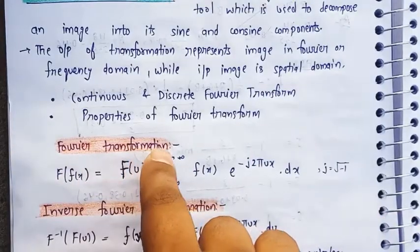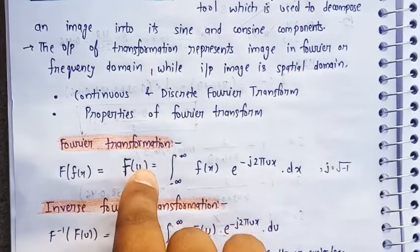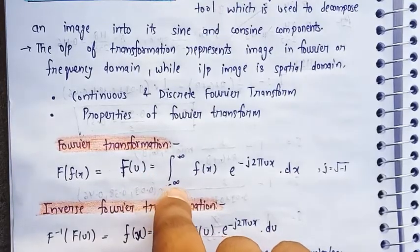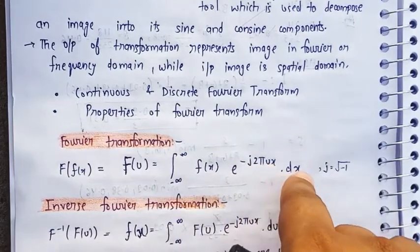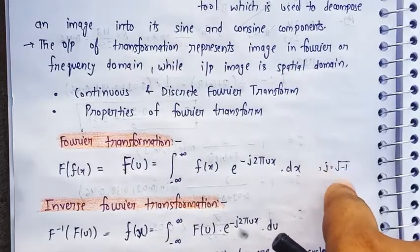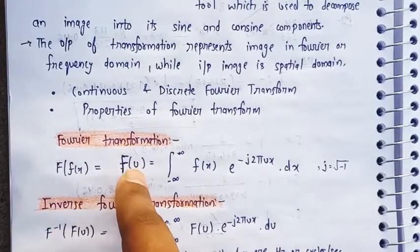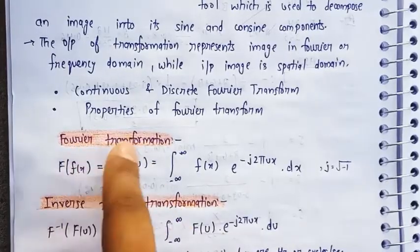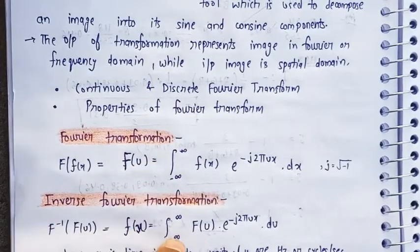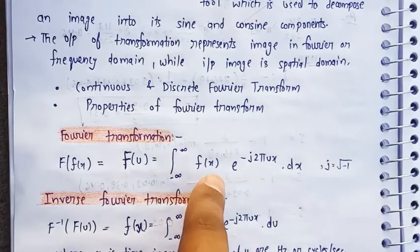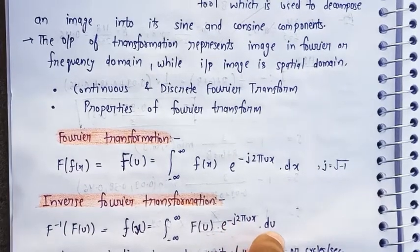First one is the Fourier transformation. The formula of Fourier transformation F(x) is a signal, or F of u. F(x), it means we are finding the F(x) because what we were doing in Fourier transformation, we are finding the F(x) value. In this format, minus infinity to infinity, there will be F of u, the value of this one, and e to the power minus j 2 pi u x dot du.